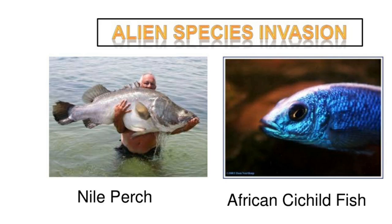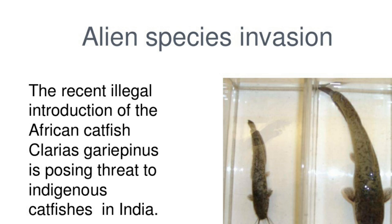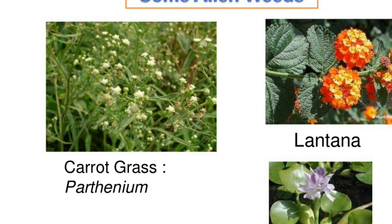Alien species invasion means the introduction of any foreign species. For example, the Nile perch, an African fish. Another example is the recent illegal introduction of the African catfish, Clarias gariepinus, which is posing a threat to indigenous catfish species in India. Invasion of plants like carrot grass, Parthenium, and Lantana are also examples of alien species invasion.